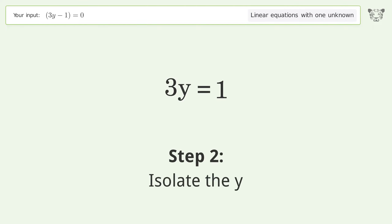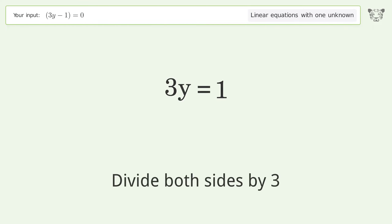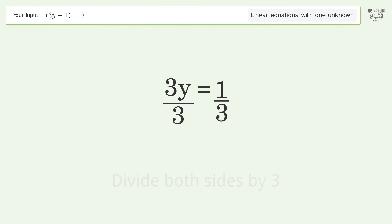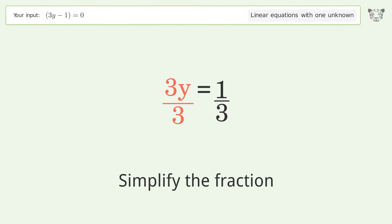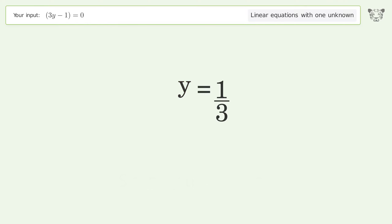Isolate the y: divide both sides by three and simplify the fraction. So the final result is y equals one over three.